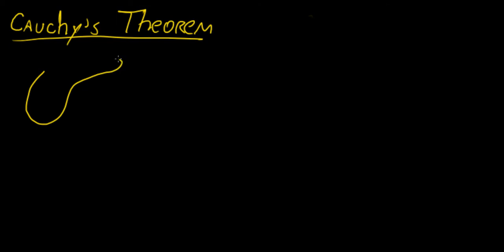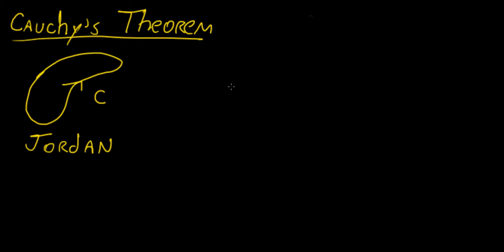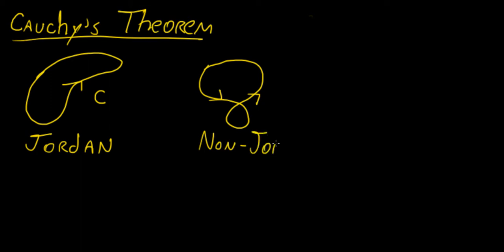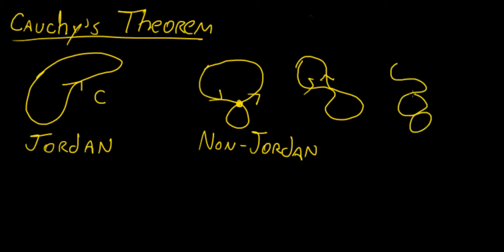So if you have a simply connected curve, which we sometimes call a Jordan curve — Jordan means that we have a curve that is smooth, continuous, and non-self-intersecting. A self-intersecting curve would be something that goes through itself. That would be non-Jordan and not simply connected, but rather doubly connected because it crosses over at a specific point. Similarly, a function that doesn't cross over but touches at a specific point is also not simply connected.